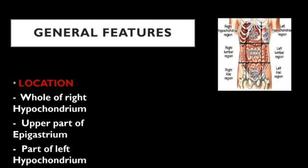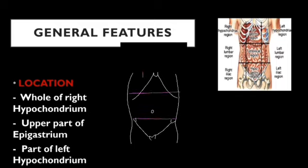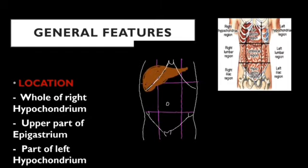Coming to the general features of the liver. To locate the liver, it is present just below the diaphragm. When we divide the abdomen into nine quadrants by four imaginary lines — two horizontal lines being the trans-tubercular and transpyloric lines, and two vertical lines being the right and left mid-clavicular lines — we divide the abdomen into nine quadrants. The upper three quadrants are the right hypochondric, left hypochondric, and the epigastric region in the center.